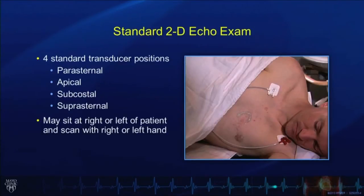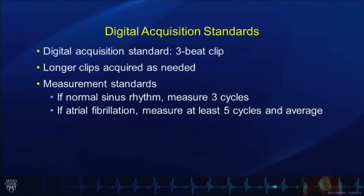The sonographer may sit at the right or left side of the patient and scan with either the right or the left hand. Digital acquisition standards should be a three-beat clip. This gives us an adequate representation of anatomy and physiology. Longer clips may be acquired as needed, especially in patients with irregular rhythms like atrial fibrillation, or in cases of pericardial disease and Doppler.